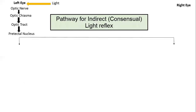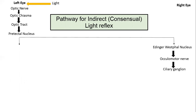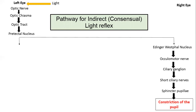Now, the pathway of the indirect or consensual light reflex: from the pretectal nucleus, neurons project to the contralateral Edinger-Westphal nucleus. From there, preganglionic and postganglionic fibers cause contraction of the sphincter pupillae muscle, resulting in constriction of the pupil in the opposite eye. This is the pathway for the indirect or consensual light reflex.